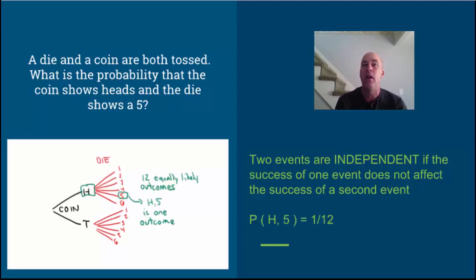There are 12 equally likely outcomes. Only one of them is what we would consider a success - a heads and a 5. So therefore the probability is 1/12.